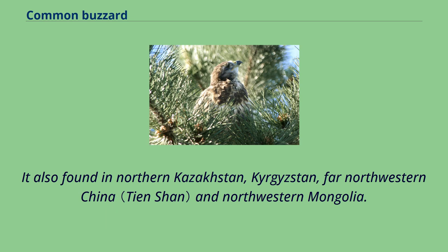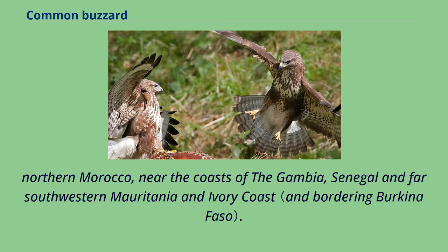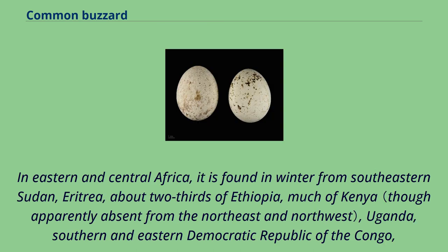Non-breeding populations occur, either as migrants or wintering birds, in southwestern India, Israel, Lebanon, Syria, Egypt, northern Tunisia, northern Morocco, near the coasts of the Gambia, Senegal, far southwestern Mauritania and Ivory Coast. In eastern and central Africa, it is found in winter from southeastern Sudan, Eritrea, about two-thirds of Ethiopia, much of Kenya, Uganda, southern and eastern Democratic Republic of the Congo, and more or less the entirety of southern Africa from Angola across to Tanzania down the remainder of the continent.